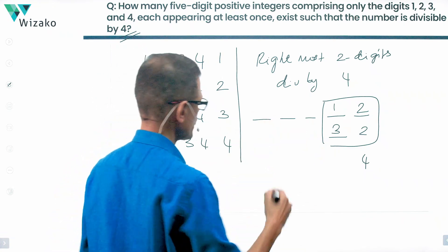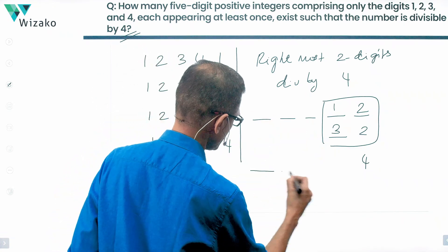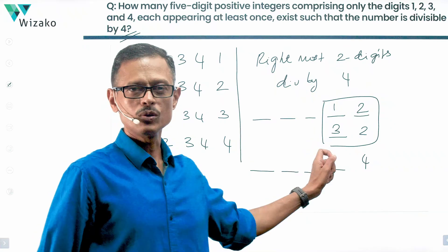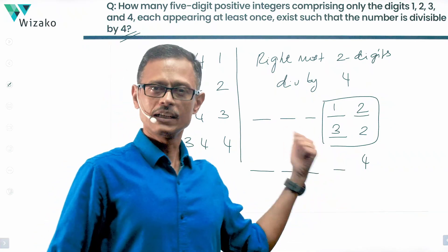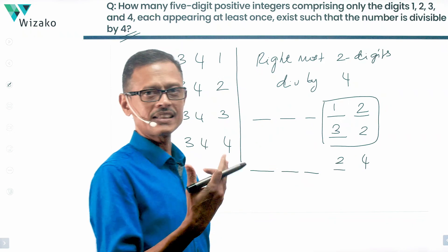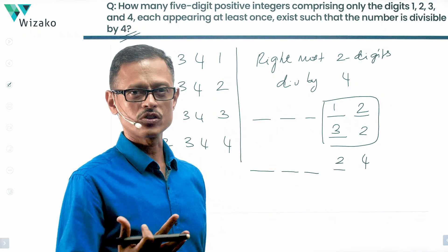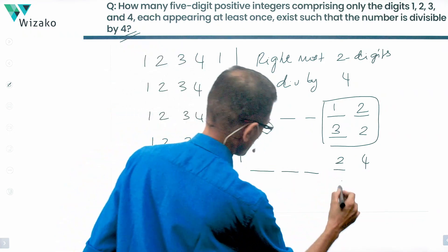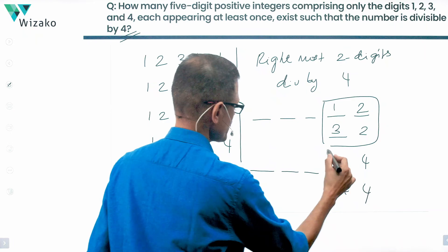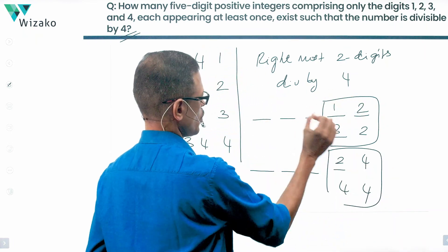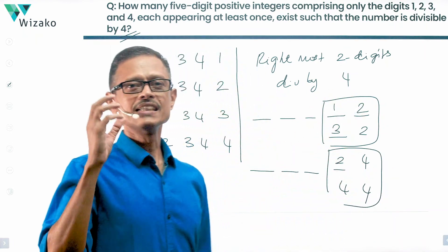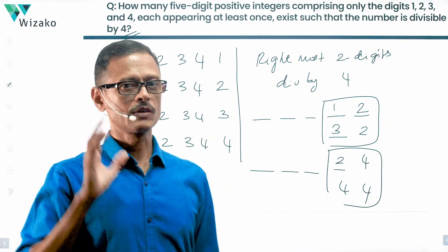Now, when the last digit is a 4, what possibilities do we have? Will a 1 make the cut? No — 14 is not divisible by 4. Will a 2 make the cut? Yes — 24, yes. Will a 3 make the cut? No — 34 is not. Will a 4 make the cut? Yes — 44 is. So if the last 2 digits are 12, 32, 24, or 44, then the number is divisible by 4.